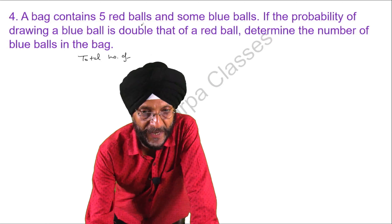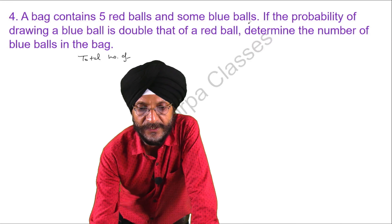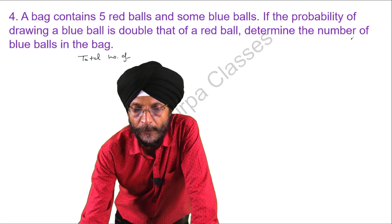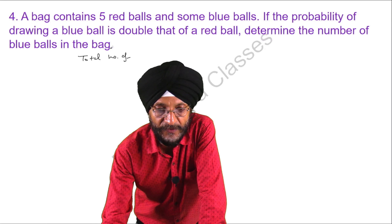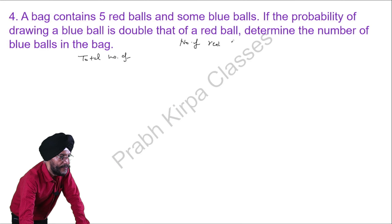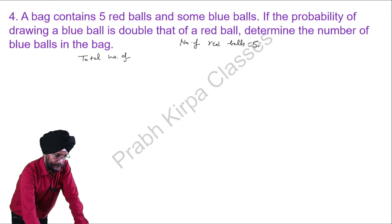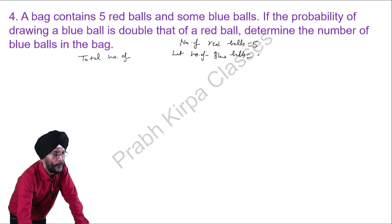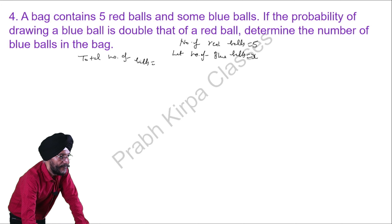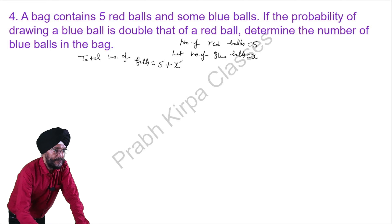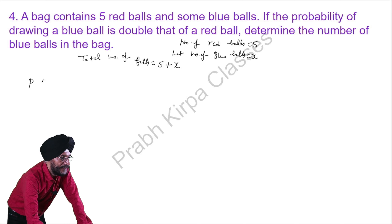A bag contains 5 red balls and some blue balls. If the probability of drawing a blue ball is double that of a red ball, determine the number of blue balls in the bag. Given: 5 red balls. We assume the number of blue balls is x. So the total number of balls is 5 plus x.